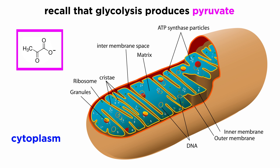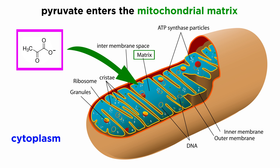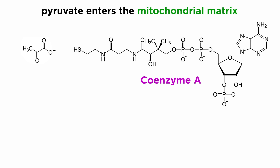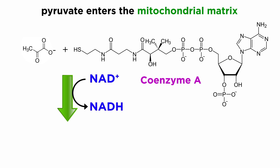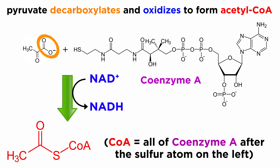This activity begins with the pyruvate molecules that were generated in the cytoplasm during glycolysis. These pyruvates will enter the mitochondrial matrix to find coenzyme A. In the presence of NAD+, pyruvate will undergo decarboxylation, oxidation by NAD+, and then attachment to coenzyme A, generating acetyl-CoA.